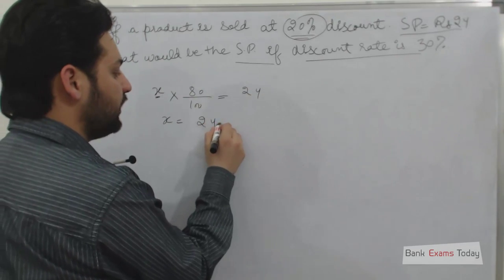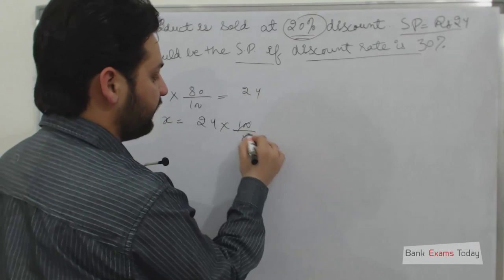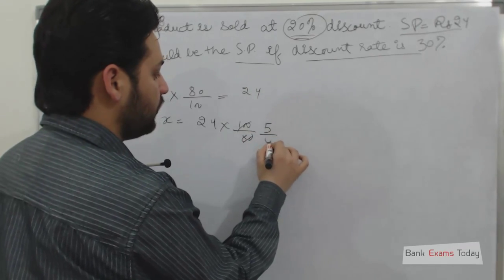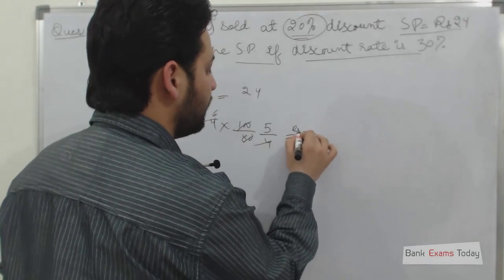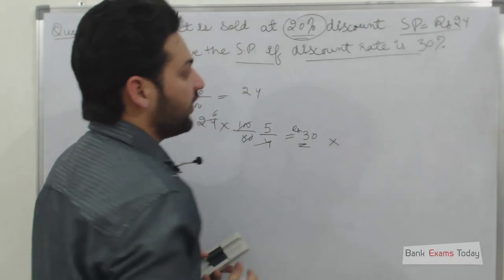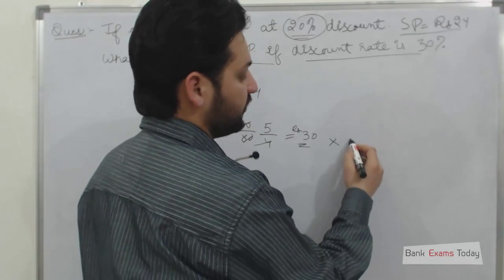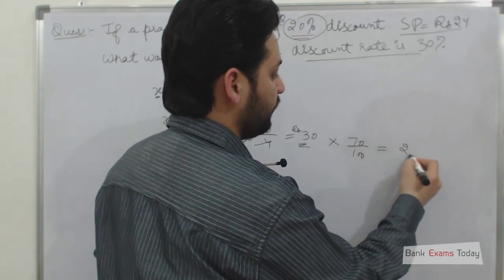Simply to find X, 24 multiplied by 100 over 80 or 5 over 4. So 30 is list price. If the discount rate is 30%, the final sales price will be 70% of the list price, it will be Rs. 21.